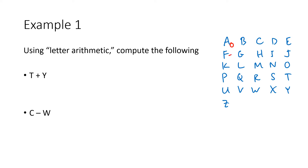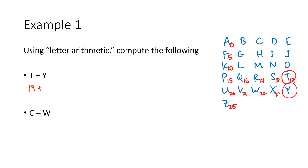A starts at 0, and then 5 letters later is F which is 5, 5 letters later is K so that's 10, 5 letters later in the alphabet is P, U is 20, and Z is 25. The first problem is T plus Y. T is in the fourth row: 16, 17, 18 — so T is 19. Y is down here: 21, 22, 23, 24 — so Y is 24.